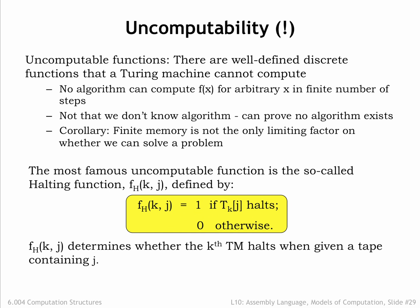The most famous uncomputable function is the so-called halting function. When Turing machines undertake a computation, there are two possible outcomes. Either the Turing machine writes an answer onto the tape and halts, or the Turing machine loops forever.